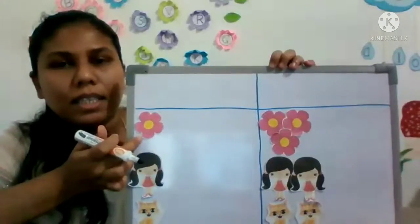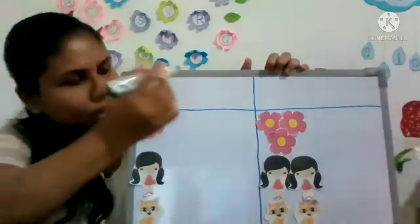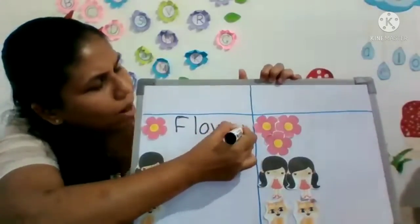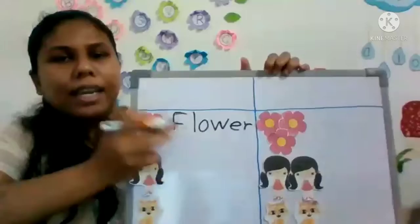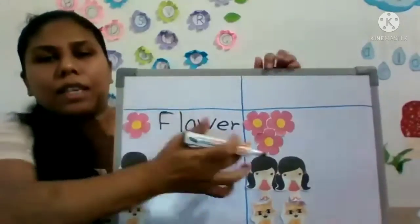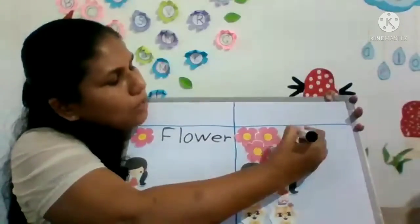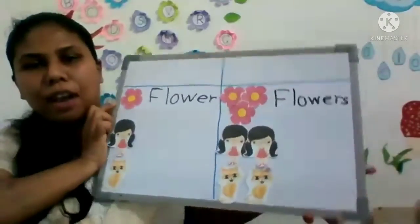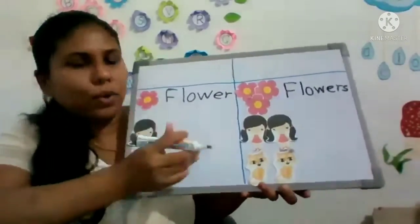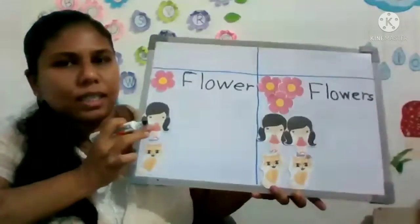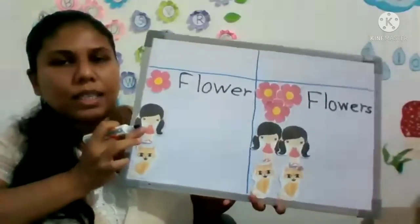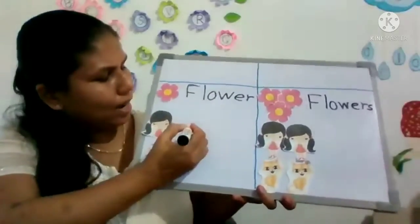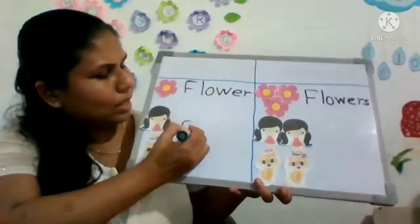What is this? Flower, right? Very good. Then what is flower? Right. Now tell me, flowers — what are these? Flowers. So flowers, right. Flower, flowers. Next one, okay. Yes, who is this? Who is this girl? Girl, right.